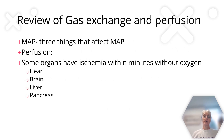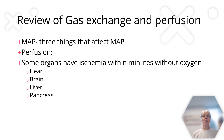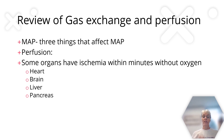Reviewing gas exchange and perfusion: three things are affected by the MAP, and you have to have an adequate MAP before perfusion can actually take place. Those three things that affect your MAP are cardiac output (stroke volume and heart rate), and the size and integrity of your vascular bed. The body can selectively increase or decrease blood flow to specific areas — for example, prioritizing the heart, liver, and pancreas, while decreasing blood flow to the feet, hands, or GI tract.